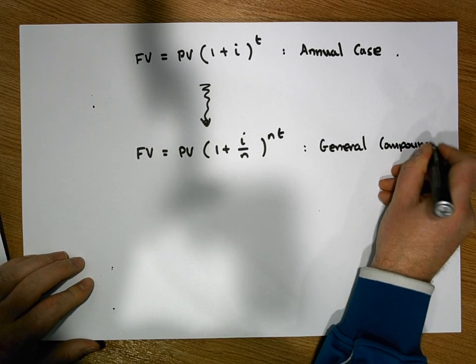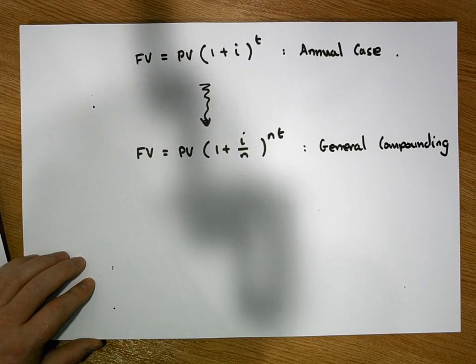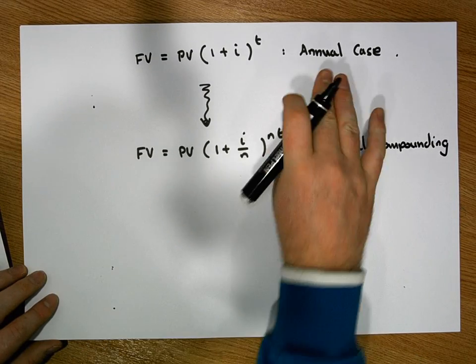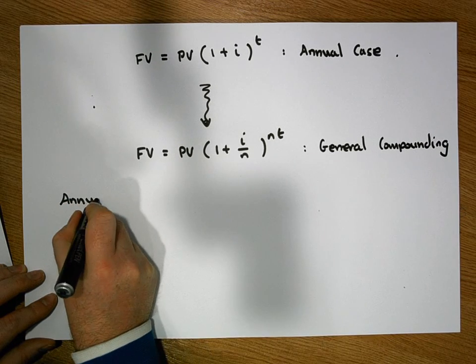And let's just have a look at some examples here. We have a number of different types of compoundings. We could have the annual case, annual compounding.